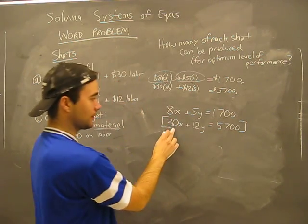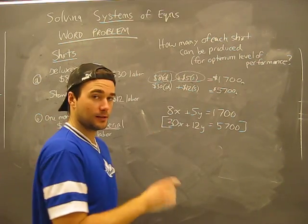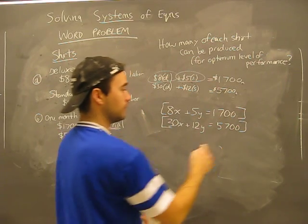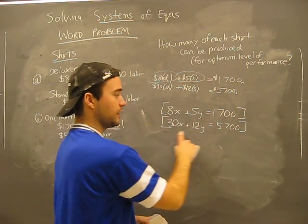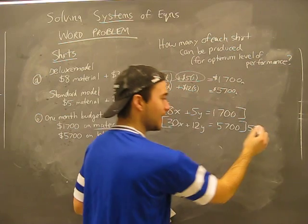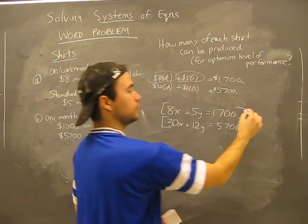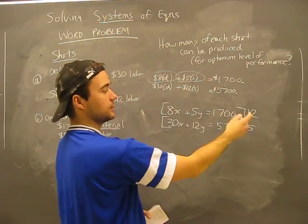I know that the LCM of 30 and 8 is some big number. I don't want to touch it. 12 and 5, though I know that the LCM is 60. So what I can do is multiply this bottom equation by 5, the entire equation by 5, to make this a 60. I want to make this a 60 as well, so I'm going to times the entire equation by 12.